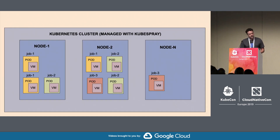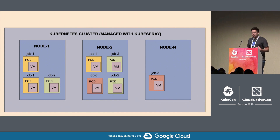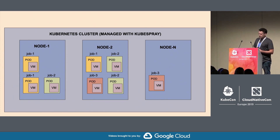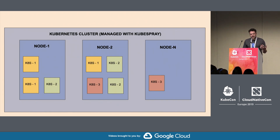To schematize: on the bare metal we deploy a large Kubernetes cluster using KubeSpray — our own project. Then for each job we create a separate namespace — shown in different colors here — and deploy a Kubernetes cluster inside each of them. So in the end we effectively have Kubernetes-on-Kubernetes.